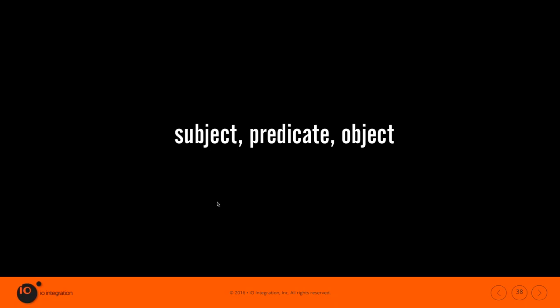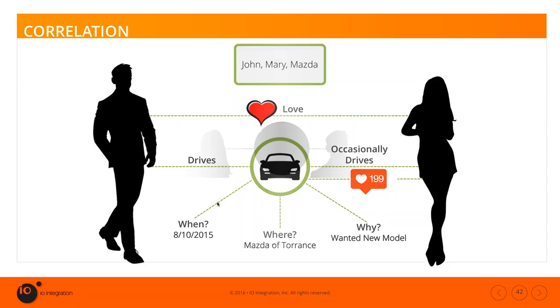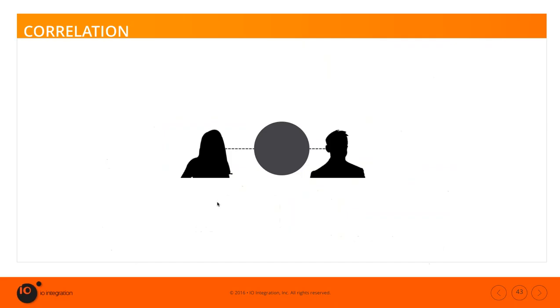If we go back to John loving Mary, and Mary occasionally driving the Mazda, and John being enthusiastic about the Mazda — John loving Mary and John loving the Mazda clearly mean different things, or at least for Mary's sake I hope so. But in a semantic database, it allows us to describe those relationships differently and provide different weight, different meaning, different context. We actually have a semantic understanding that John's love for Mary is different than his love for his Mazda.